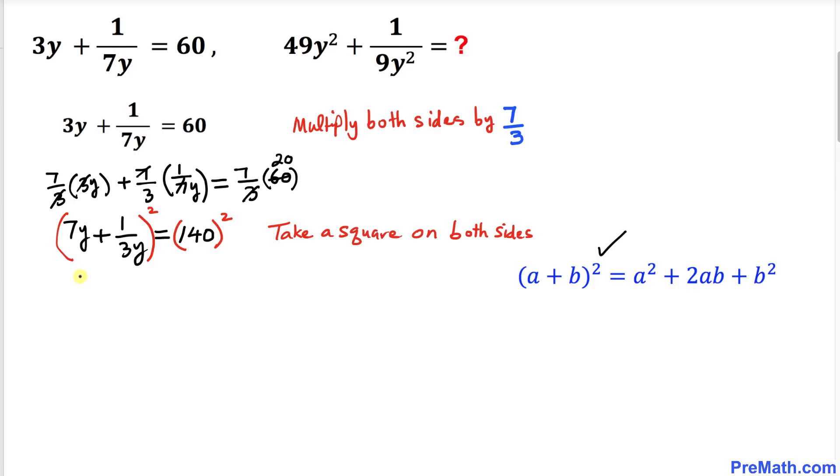Let's take care of this square. 7y squared becomes 49y², and (1/3y)² becomes 1/9y². Plus 2 times 7y times 1/3y.